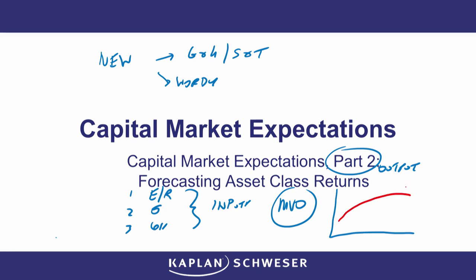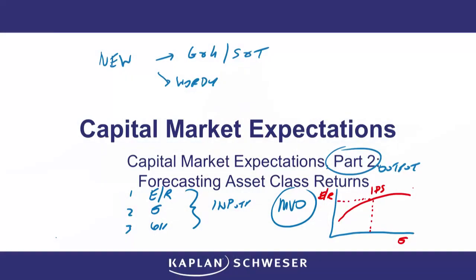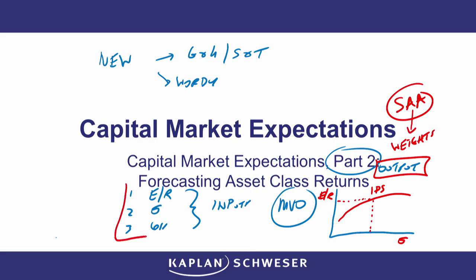Our famous efficient frontier has the expected return on the left and our volatility on the bottom. Where this comes back to is returning to the start of the process — to the investor's required IPS return. What return do they require? What balance of risk and return do they require? And the output you receive from this process are the weightings, the asset weights to create the portfolio. So the focus in this strategic asset allocation is the inputs needed to get that portfolio for our clients.